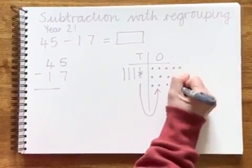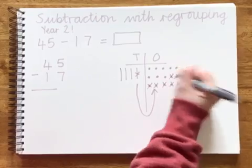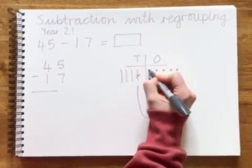Yes. 1, 2, 3, 4, 5, 6, 7. Now I'm going to count how many 1s I have got left, so I'm going to give them a tick to show that I've counted them.